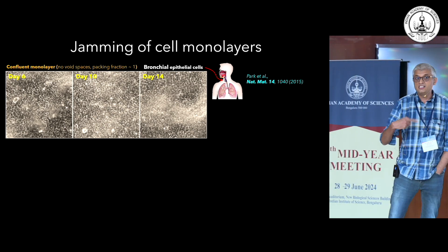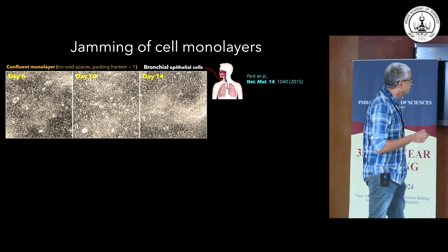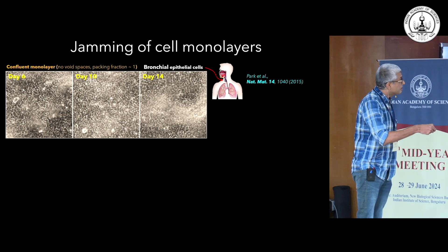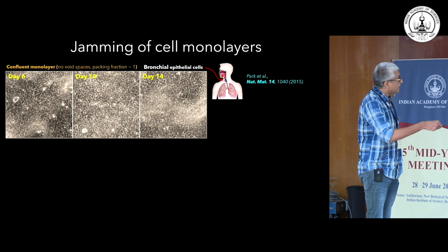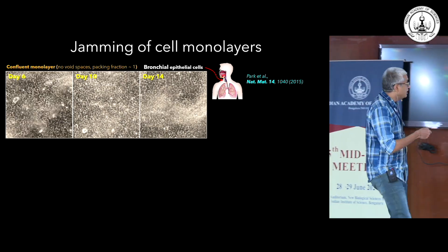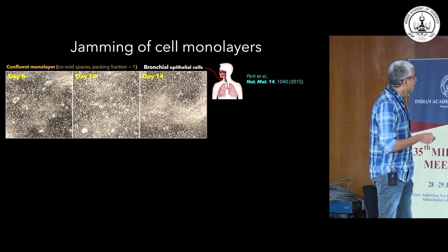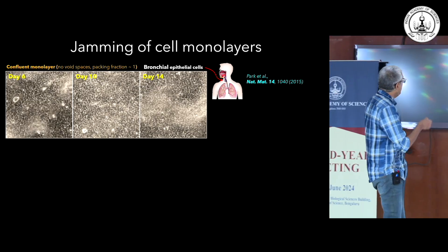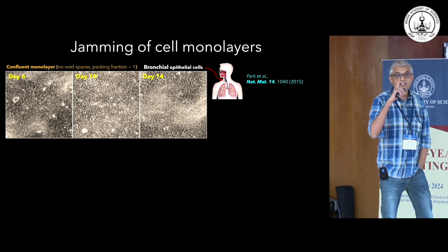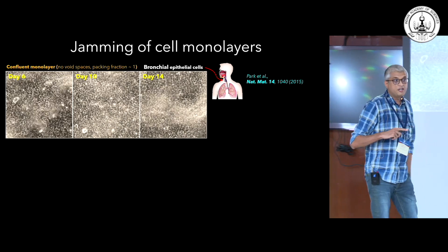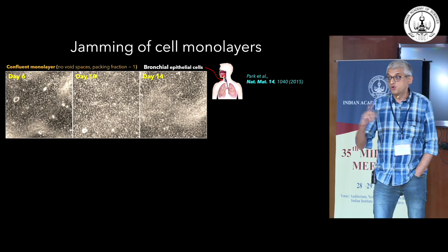Bronchial epithelial cells are the ones that line your airways. These are videos from different days of maturation of the cell — day 6, day 10, and day 14. This is a confluent monolayer, and that's going to be key. By confluent, I mean there are no gaps between cells, no white spaces.